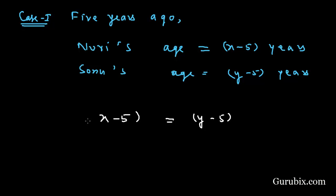Nuri was 3 times older than Sonu, so we shall multiply by 3 here. Then it equals x minus 5 equals 3y minus 15. This means x minus 3y equals minus 10. This is our equation number 1.